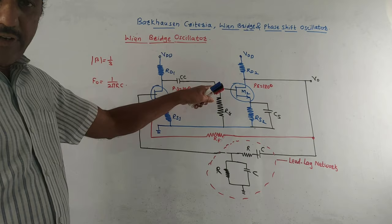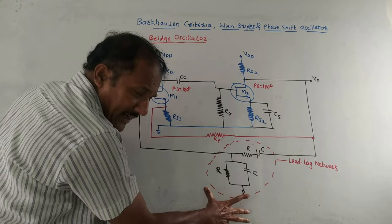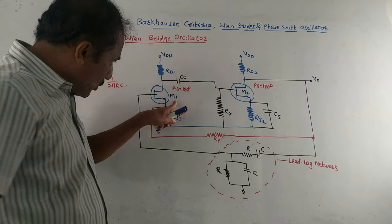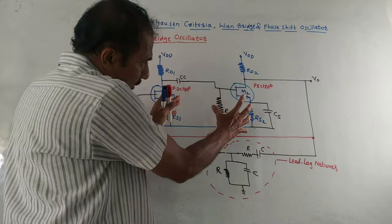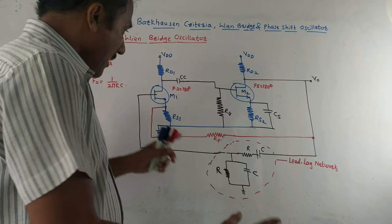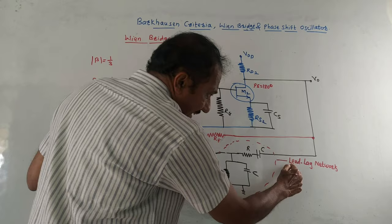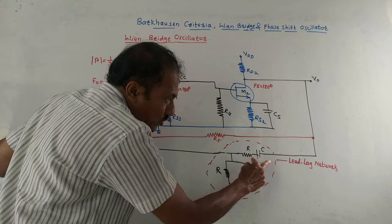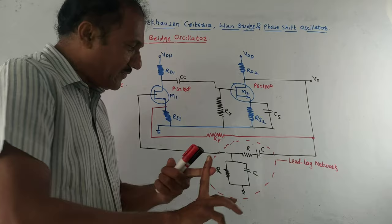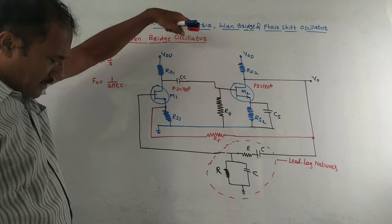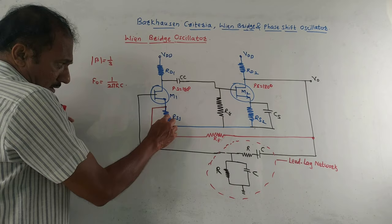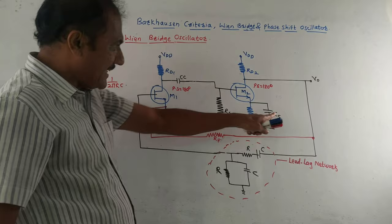The next part is the Wien bridge oscillator. In this oscillator, the feedback element is a lead-lag network — a parallel RC combination and a series RC combination, where one acts as a lead network and the other as a lag network. Two MOSFETs, M1 and M2, are used. Each MOSFET produces a phase shift of 180 degrees, so two MOSFETs together produce 360 degrees — satisfying the oscillation condition. RD1, RD2 are drain resistances, RS1, RS2 are source resistances, and CC is the coupling capacitor with CS as the bypass capacitor.